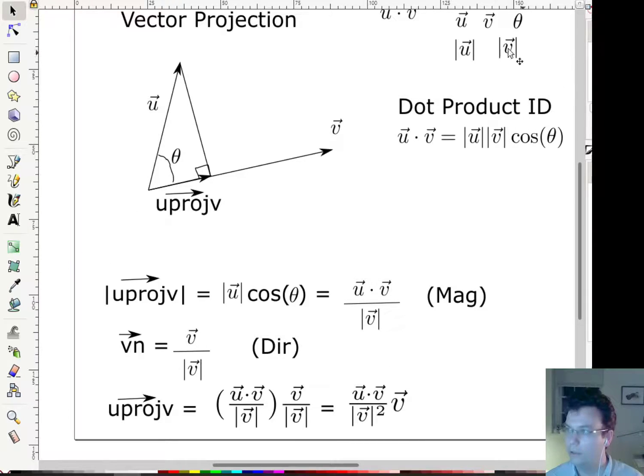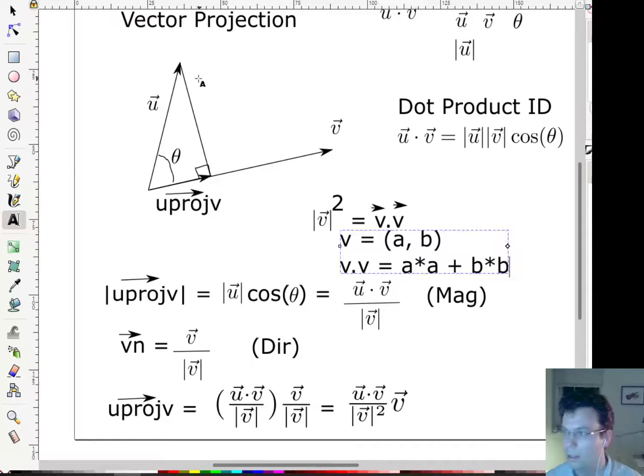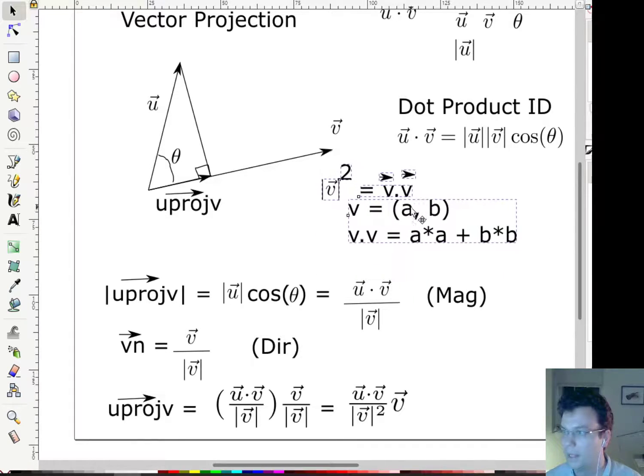Now the magnitude of v squared is actually quite interesting. So the magnitude of a vector squared turns out that's actually equal to the dot product of the vector with itself. And the reason is, let's just look at an example in 2D. So if I say, let v be (a, b), then v dot v is going to be a times a plus b times b, which is a squared plus b squared. Well, that's actually the square of the magnitude, right? Because the magnitude is the square root of a squared plus b squared. So if we square it, we cancel out the square root and we end up with a squared plus b squared.